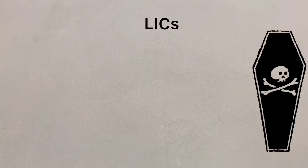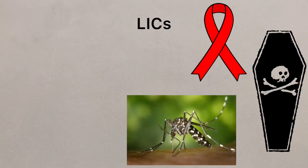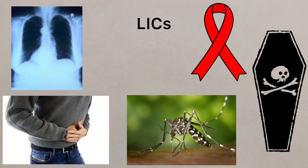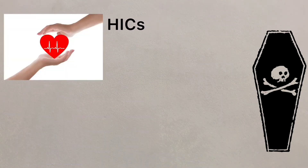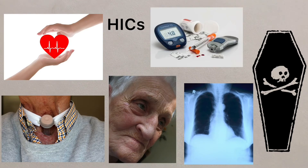In LICs, the main causes of death include HIV and AIDS, malaria, TB, lung infections, along with diarrhoea-related illnesses. Whilst in HICs, chronic heart and lung disease, cancer, dementia and diabetes are all the main culprits.